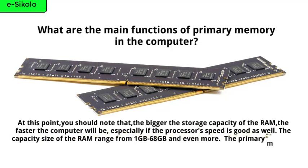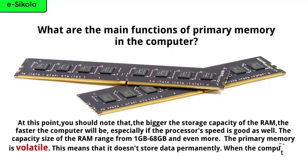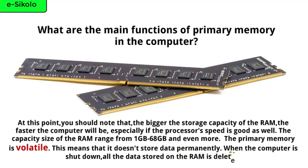The primary memory is volatile. This means that it doesn't store data permanently. When the computer is shut down, all the data stored on the RAM is deleted.